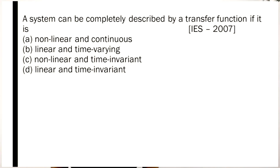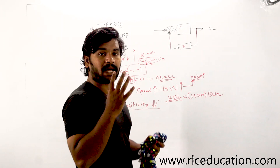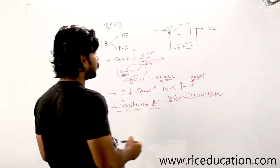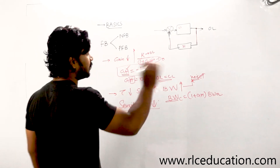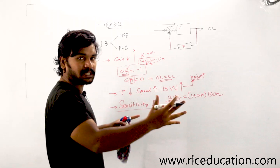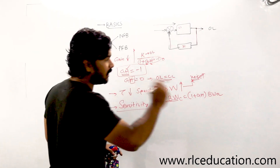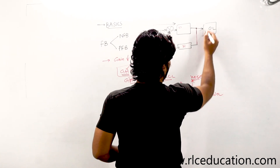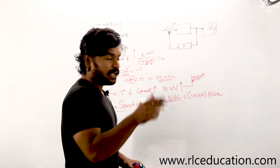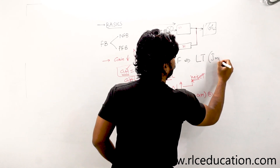Next question: a system can be completely described by a transfer function if it is... Transfer function is the mathematical model of the system. How do you find the transfer function? By applying an impulse to the input. Just like you do an x-ray on your body to get the whole picture, applying an impulse input gives you the complete picture of whatever is inside that system. The output to that impulse is called the impulse response, and that impulse response itself is the transfer function — more precisely, the Laplace transform of the impulse response of the system.